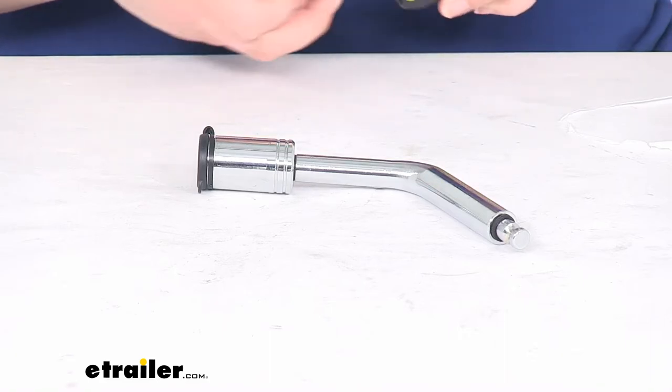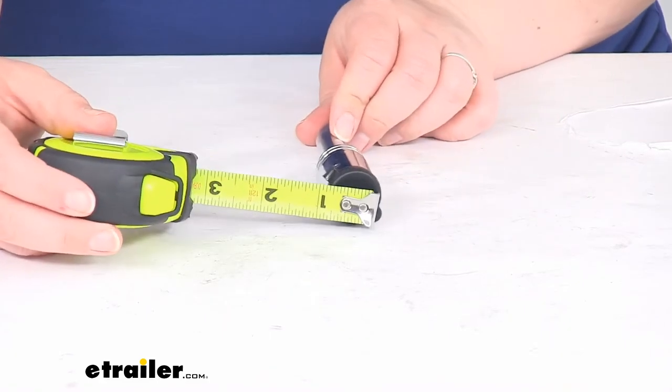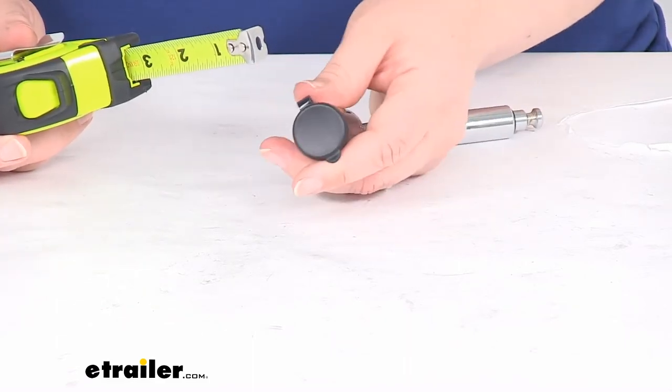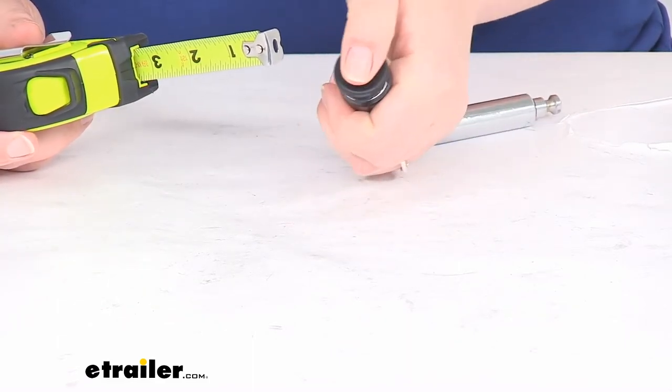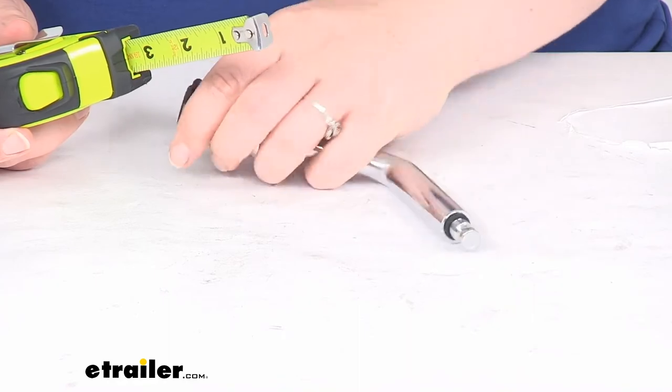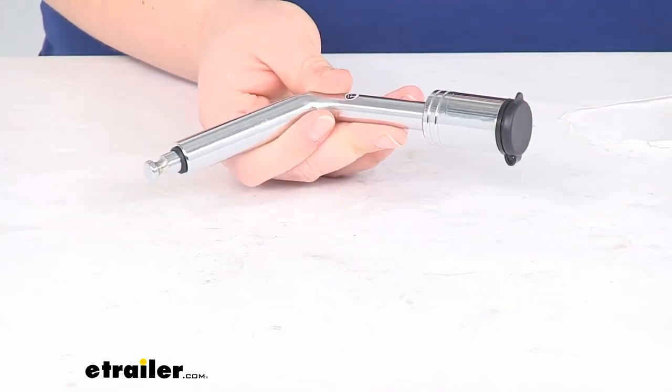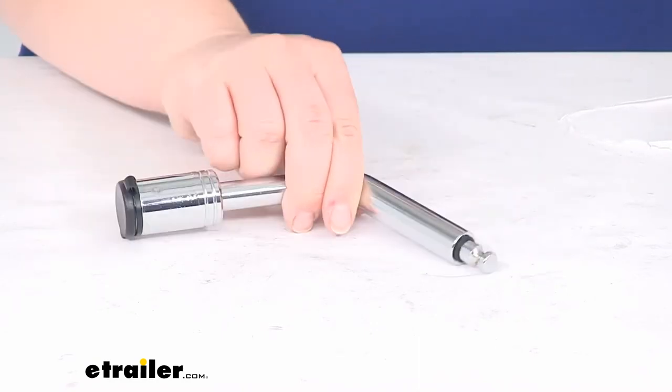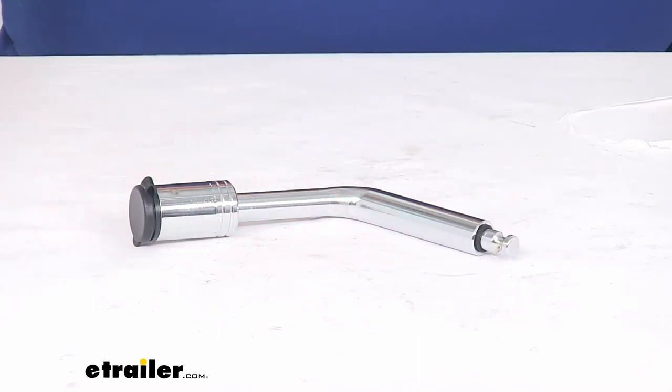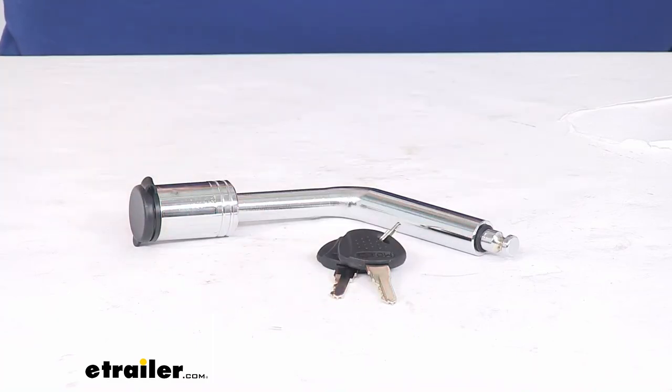The barrel of our lock is about one inch in diameter. As you can see, it does have a rubber cap to keep out any water and grit and grime from getting in there and gunking things up. The actual pin is a solid steel construction with a chrome plating to help keep it protected from any kind of rust and corrosion.